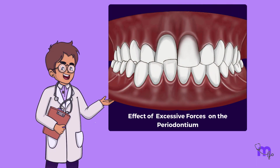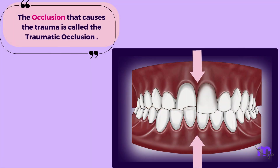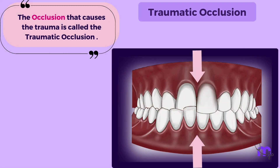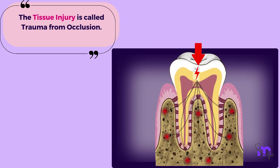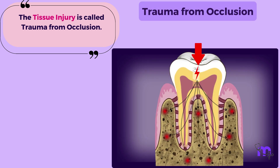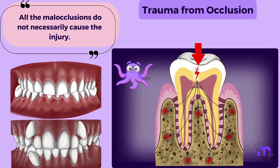Now, let's learn in detail about the effect of excessive forces on periodontium. The occlusion that causes the trauma is called traumatic occlusion, and the tissue injury is called trauma from occlusion. It is important to note that all malocclusions do not necessarily cause the injury.